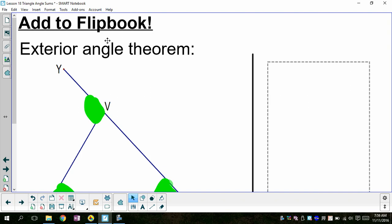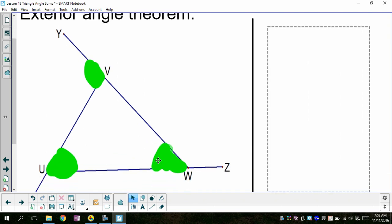So I want you to add this to the flipbook, the exterior angle theorem. Theorem is a word we haven't seen before. A theorem is something that somebody has proven to be true. So somebody along the lines discovered that if I look at two of the interior angles and I add these two angles, U and W, together, that measure in degrees is always going to be equal to the exterior angle at the third vertex.